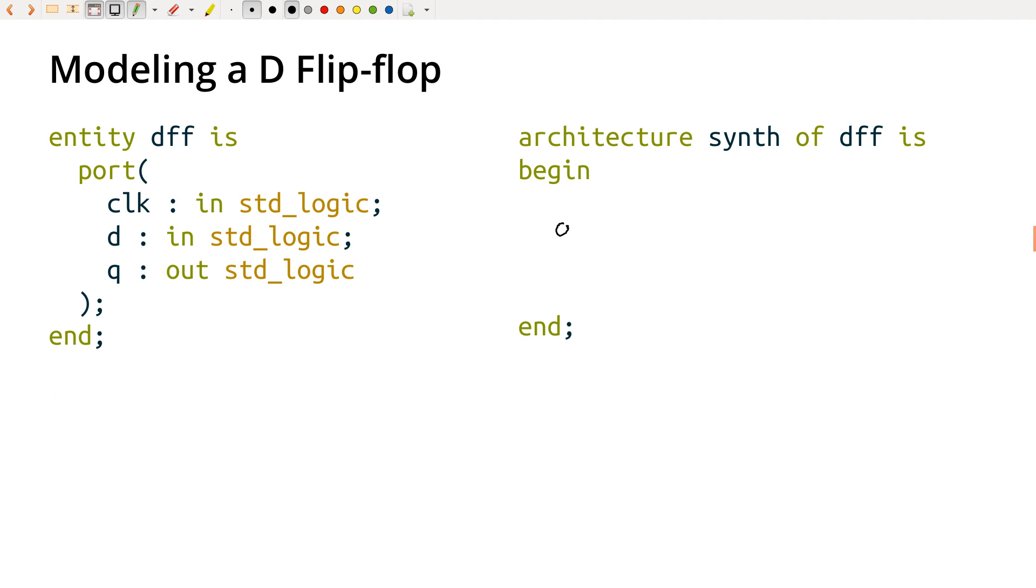And so you might write something like, Q gets the value of D when, like, clock equals one. So yeah, so this says, like, when the clock is equal to one, then Q should get the value of D.